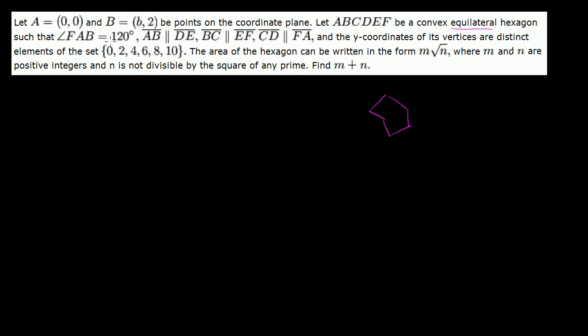Such that angle FAB is equal to 120 degrees. They show us a bunch of sides that are parallel to each other. And then the y-coordinates of its vertices are distinct elements of the set {0, 2, 4, 6, 8, 10}. The area of the hexagon can be written in the form m√n, where m and n are positive integers and n is not divisible by the square of any prime — that's just a fancy way of saying we've simplified the radical as much as possible. Find m + n.